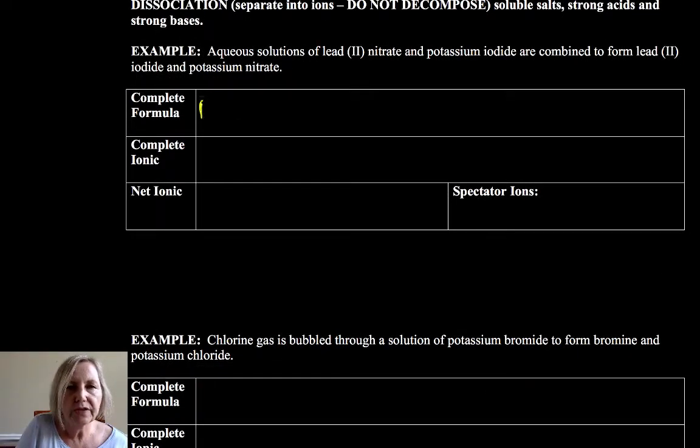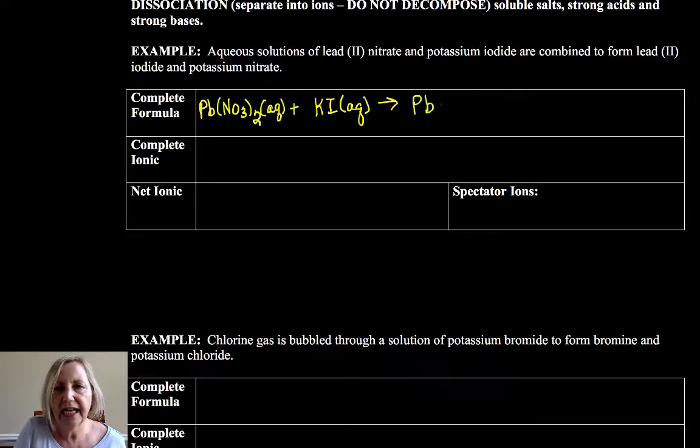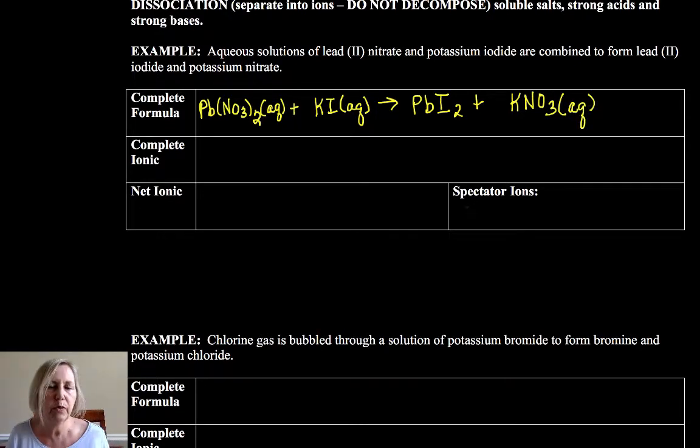So if I have aqueous solutions of lead two nitrate, this is what I would call the complete formula solution and I'm going to go ahead and write my states on the first one just to make this clear here. They're combined to form lead two iodide and potassium nitrate. So two ionic compounds form two new ionic compounds and hopefully you will recognize that as a double replacement.